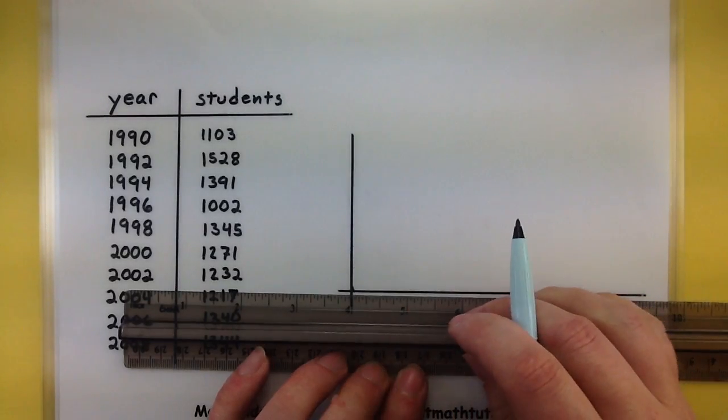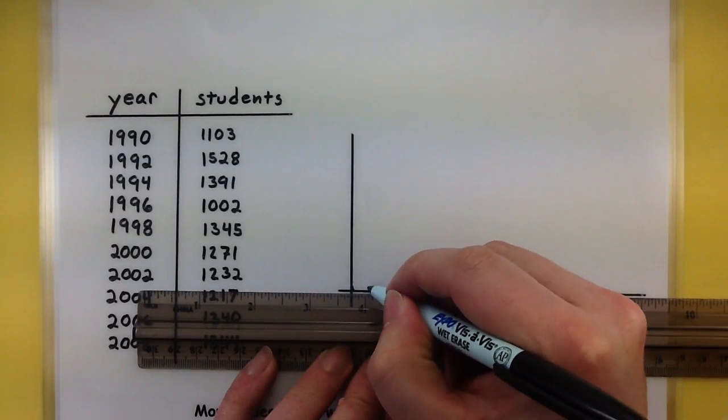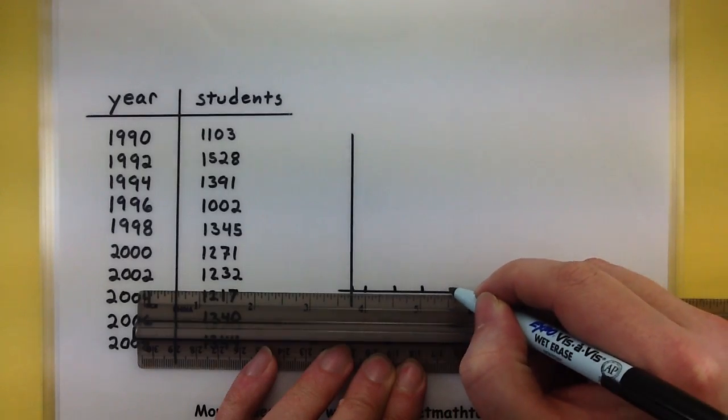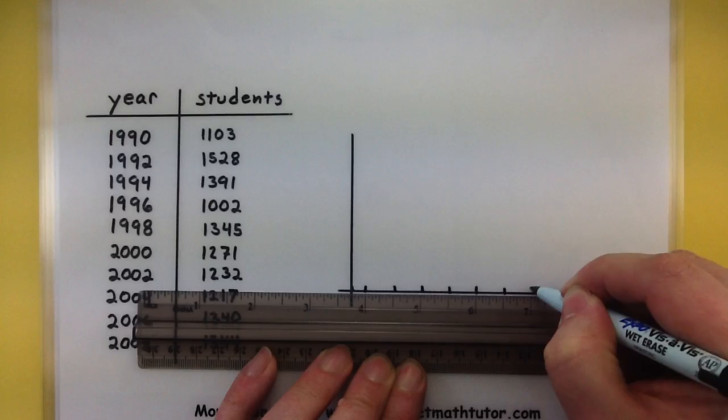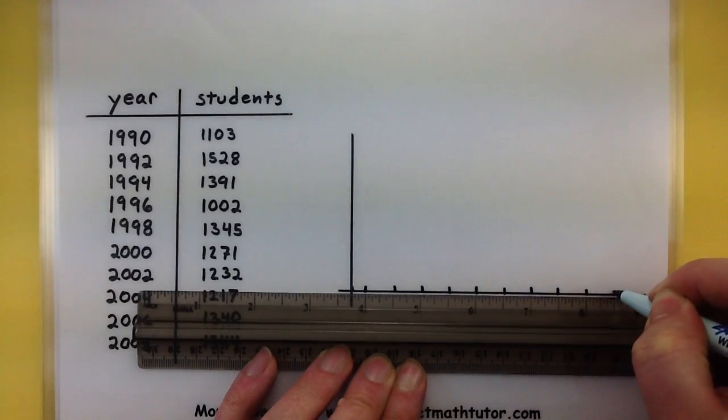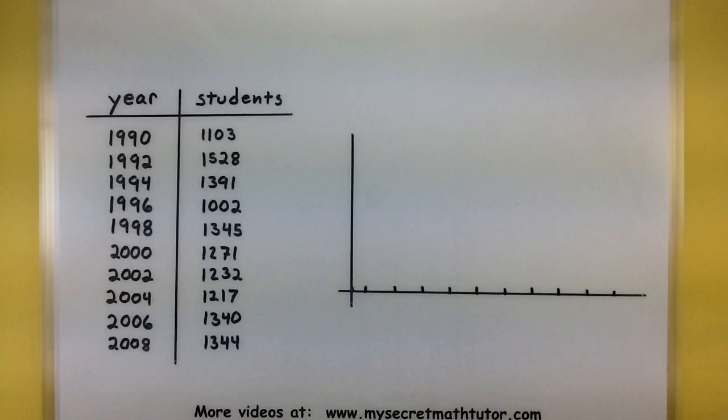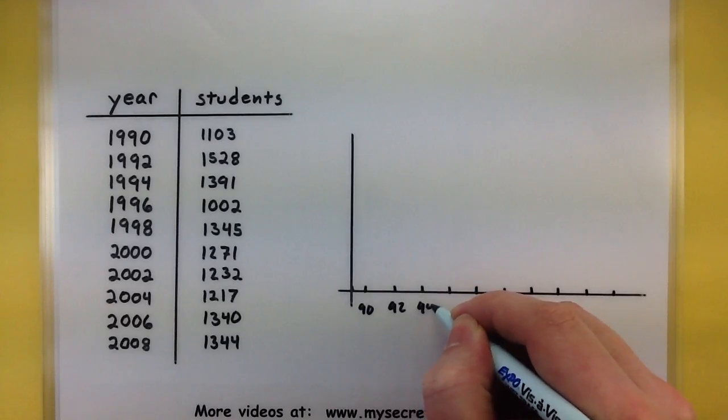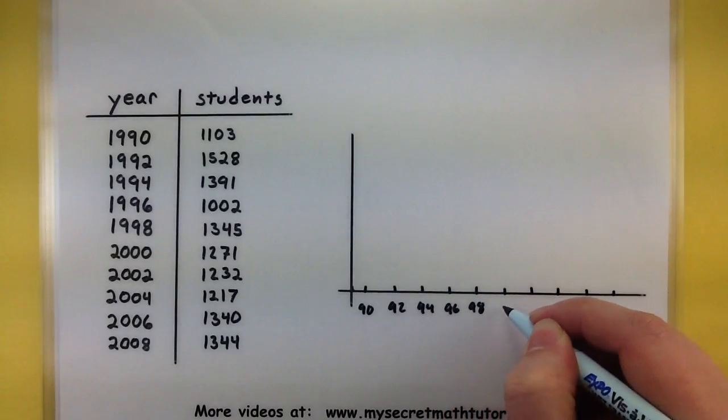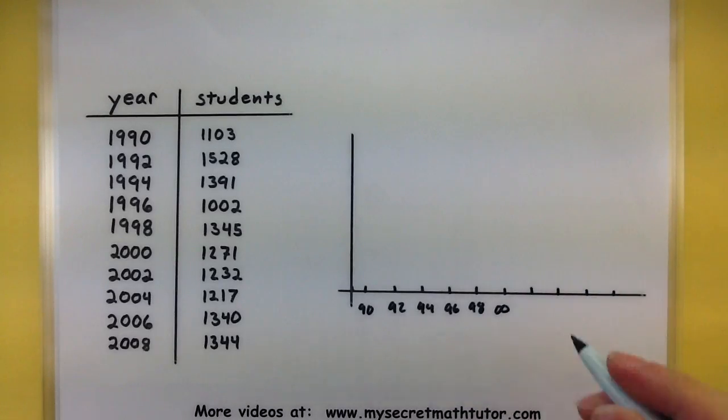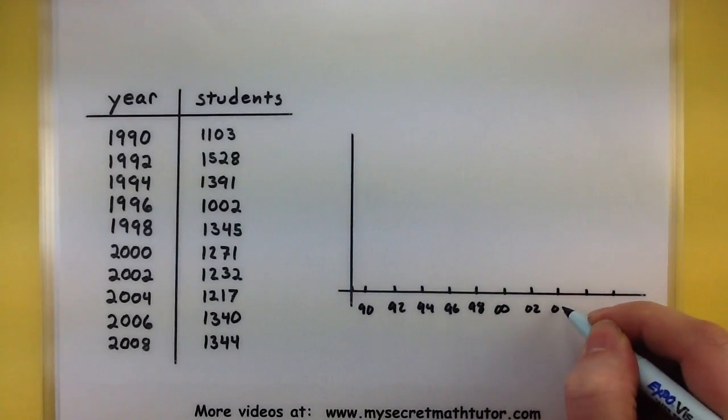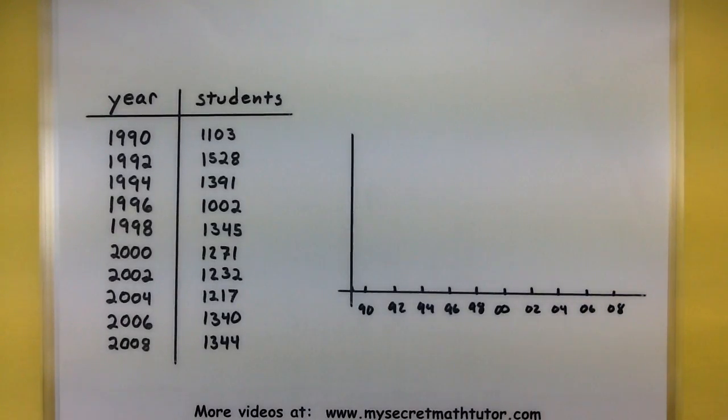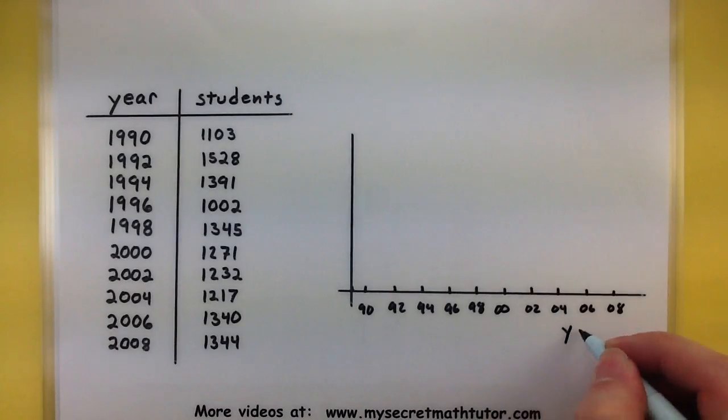We'll go ahead and start with the first year being 1990 and then go from there. So 1990, we'll have one for 92, 94, 96, 98, 2000, 2, 4, 6, 8. Alright, so I'll mark this as 90, 92, 94, 96, 98, 2000, 2002, 2004, 2006, 2008. Alright, so on the bottom, we'll mark this as our years.